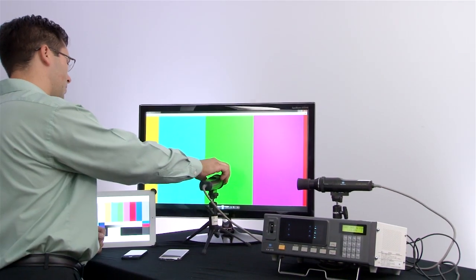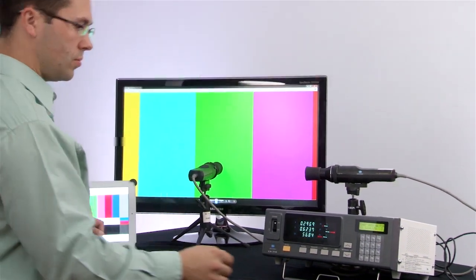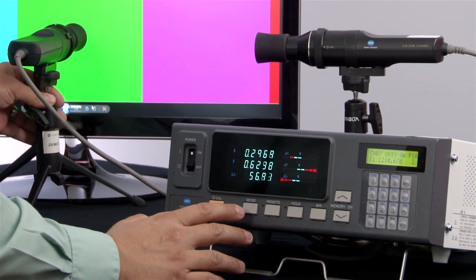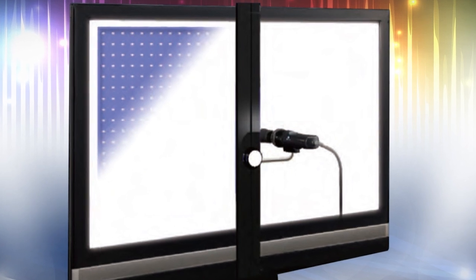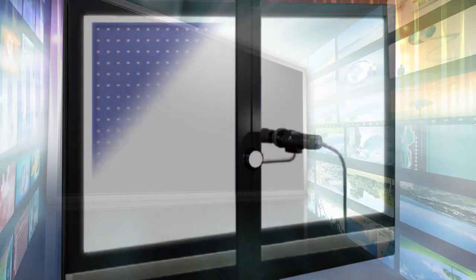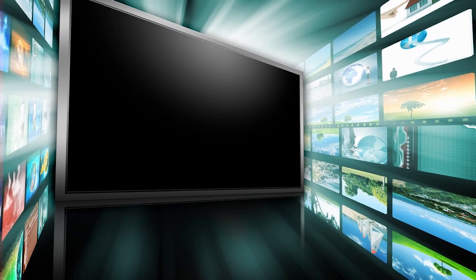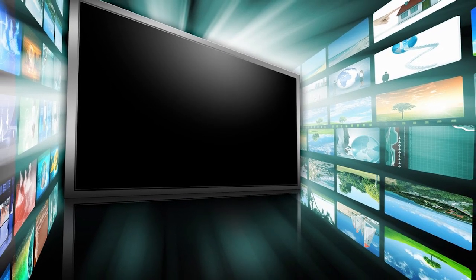The CA310 has also improved accuracy when measuring LED backlit LCD TVs, which are increasing in popularity. Conventional back lights, such as fluorescent lamps, provide relatively uniform light, but the spectral emission distribution of LEDs varies slightly with each unit.